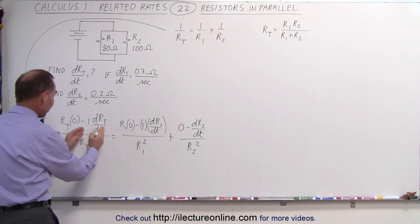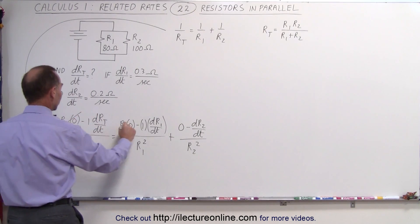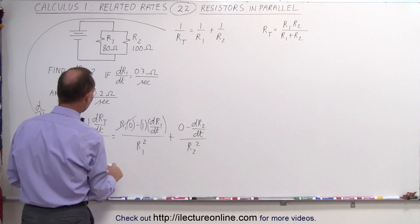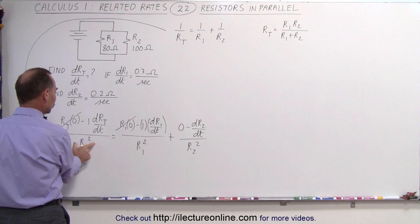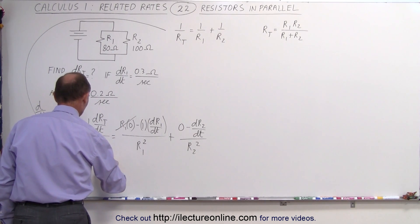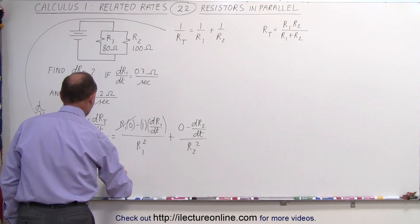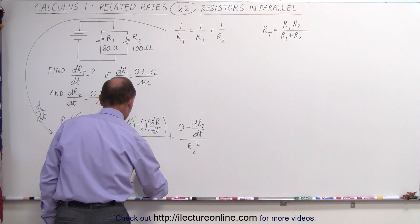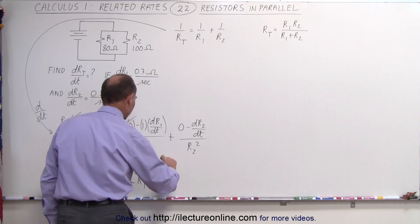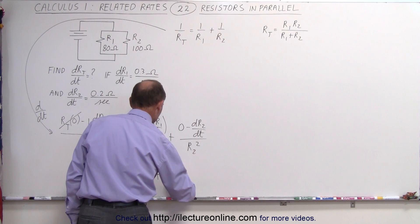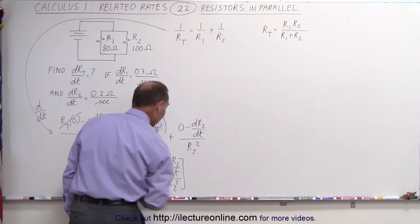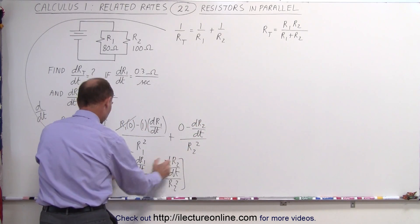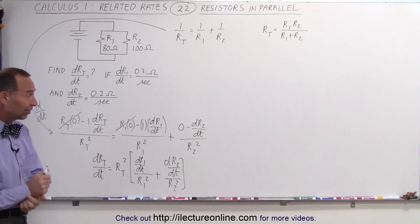Now we solve for dR_total/dt. Notice that the zero terms drop out. We multiply both sides by a negative sign to make everything positive, then multiply both sides by R_total squared. This gives us: dR_total/dt equals R_total squared times the quantity (dR1/dt divided by R1 squared plus dR2/dt divided by R2 squared). That looks correct — now let's plug in values.